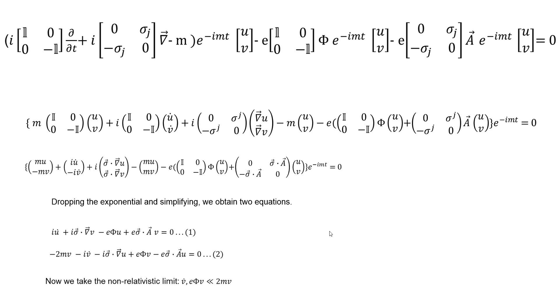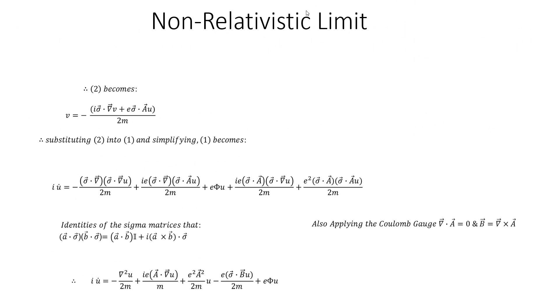Now we take into the fact that this is a non-relativistic system. So v dot and e phi v are much less than 2 times mv. We can rewrite equation 2, where this and that go away because this is more dominant. Therefore, equation 2, solving for v, becomes this.